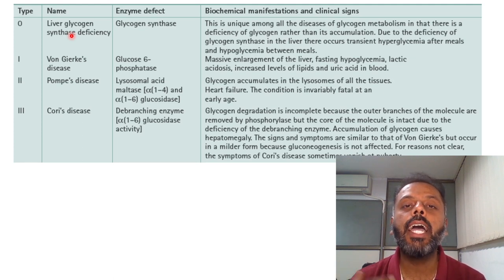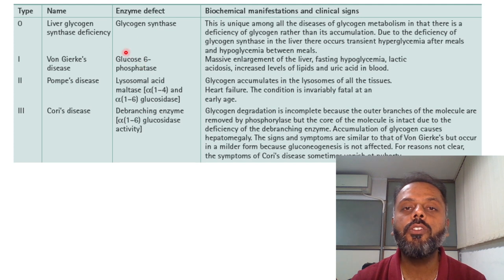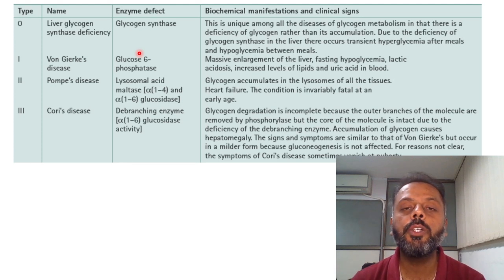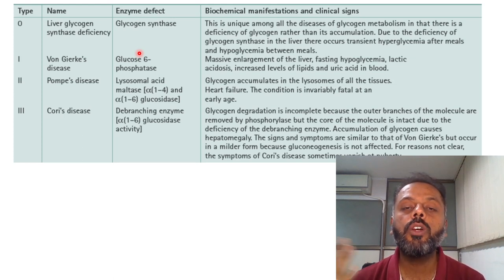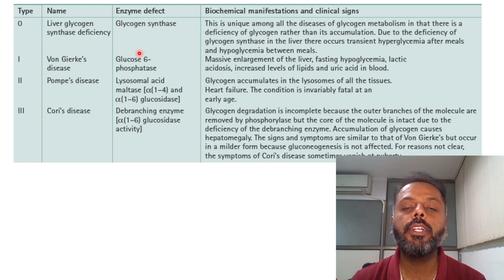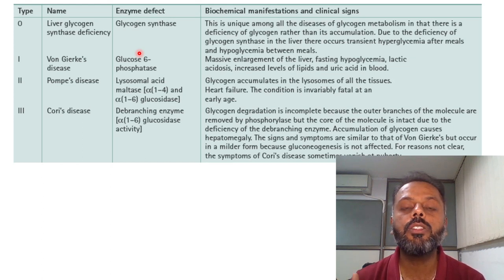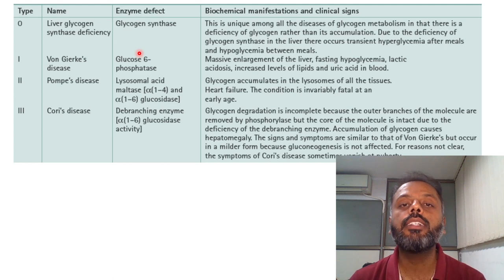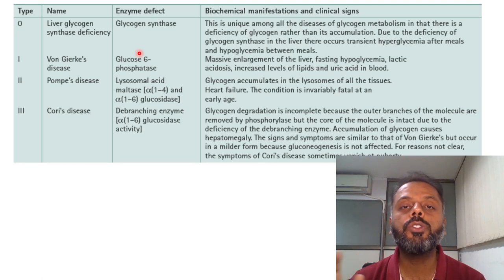Type 1 Glycogen Storage Disease is known as Von Gierke's disease and occurs due to deficiency of glucose-6-phosphatase enzyme. Because of this deficiency, there is no conversion of glucose-6-phosphate into free glucose in the liver. This leads to fasting hypoglycemia, lactic acidosis, accumulation of glycogen in the liver causing hepatomegaly, and the glucose-6-phosphate is channeled towards the HMP shunt pathway, increasing uric acid levels in the blood. In Von Gierke's disease, normal glycogen accumulates.